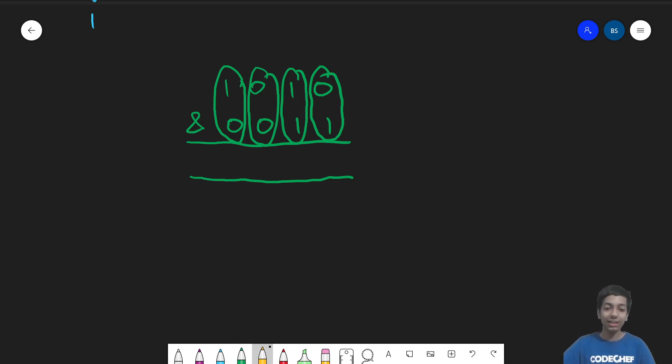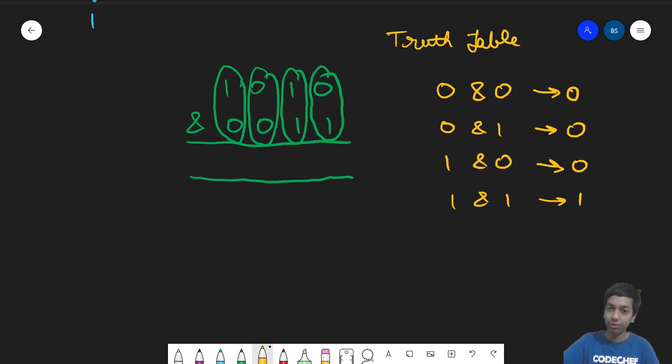So I can say that if I have zero bitwise AND with zero, this is obviously zero. Zero bitwise AND with one is also zero. One bitwise AND with zero is also zero. But one bitwise AND with one is one. So this is what is known as a truth table. If you know this, you basically know how an operator works.